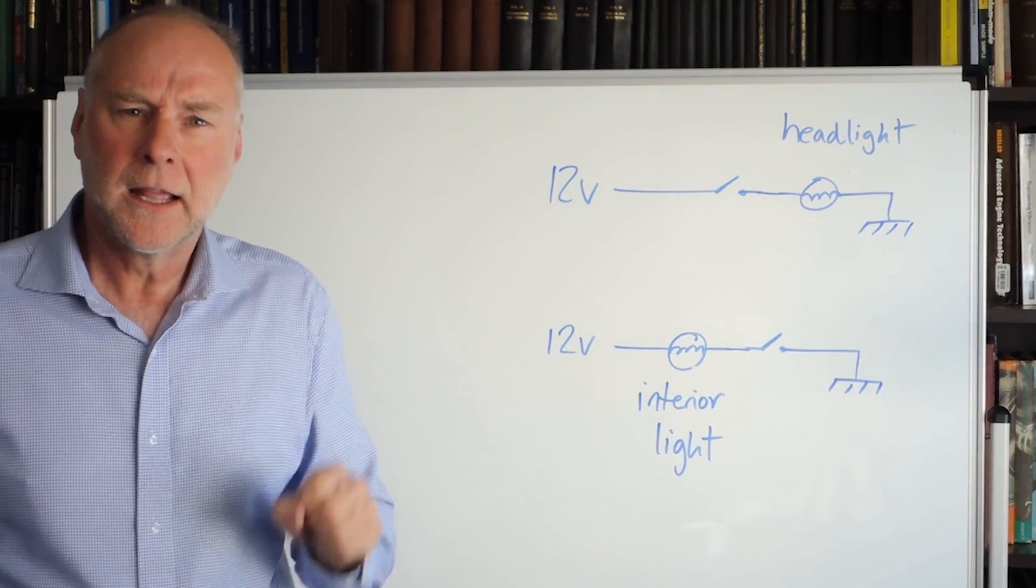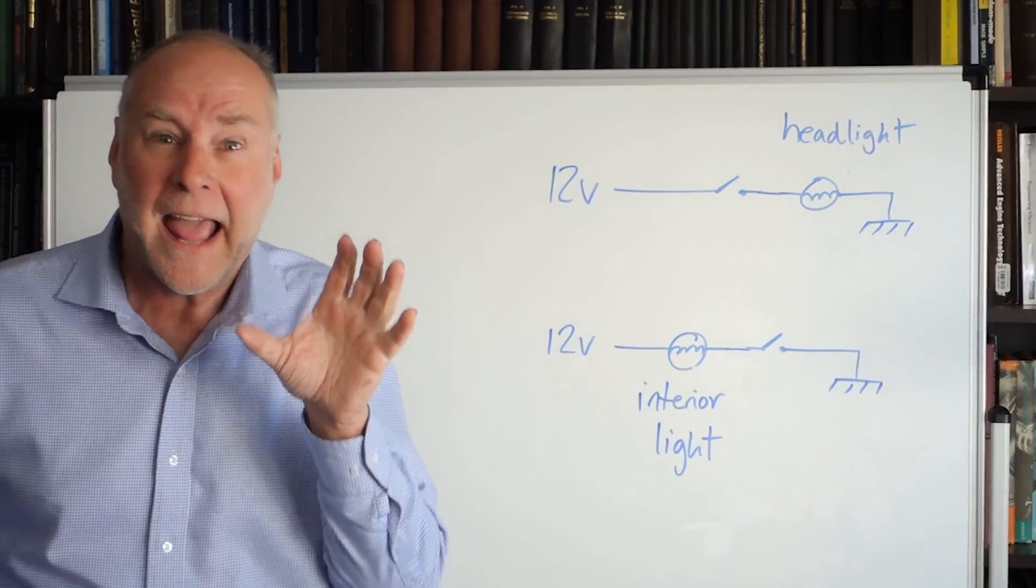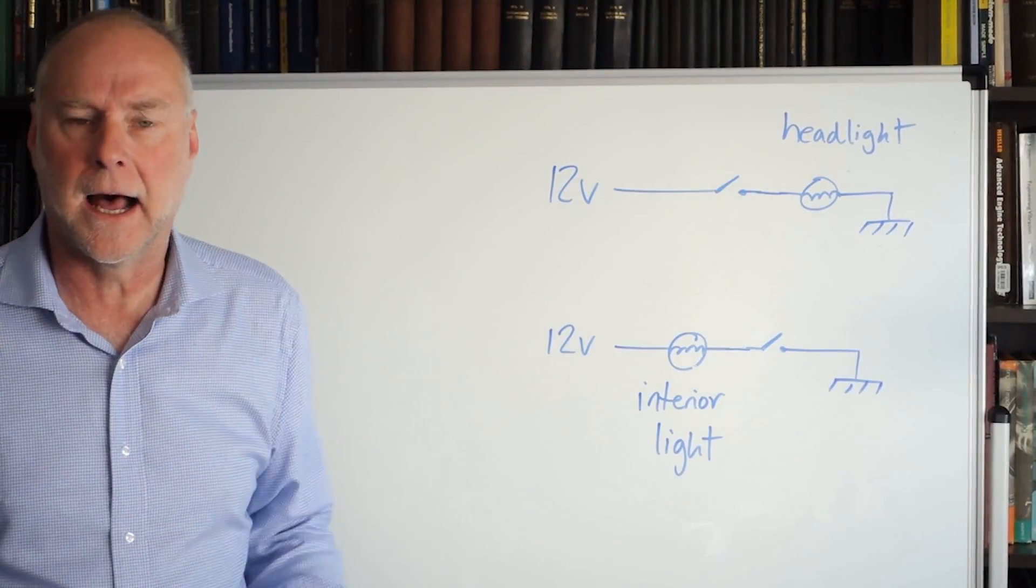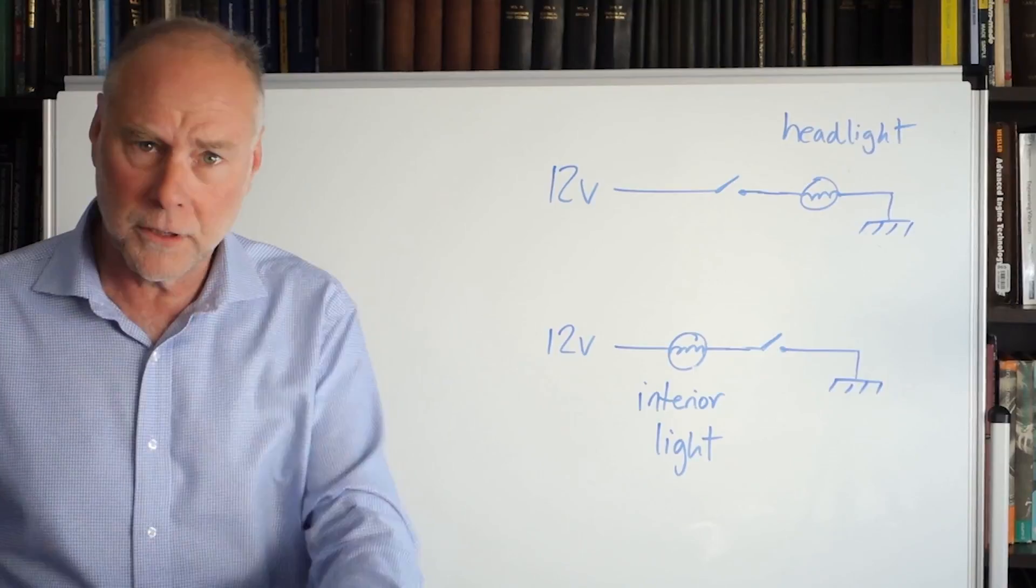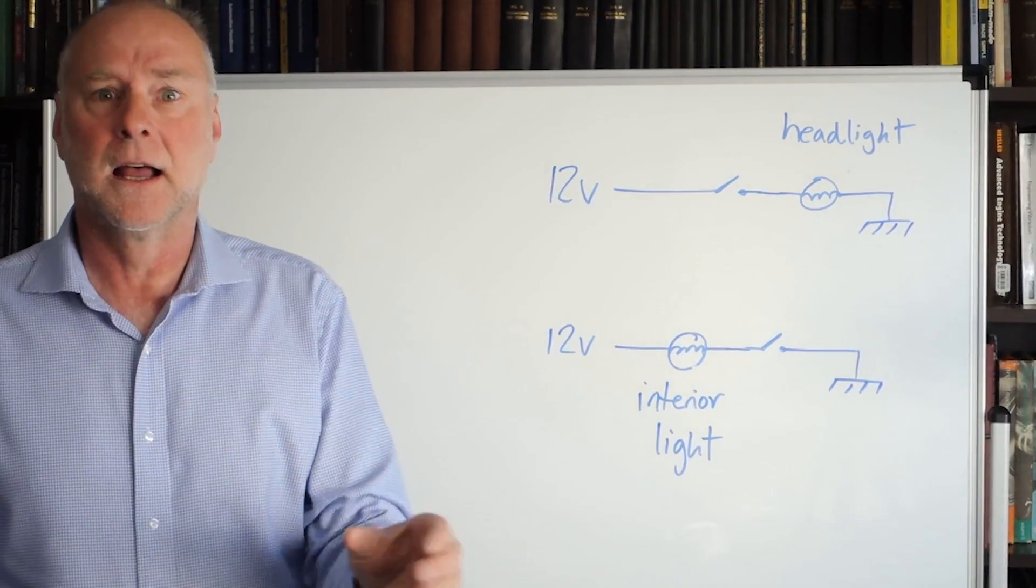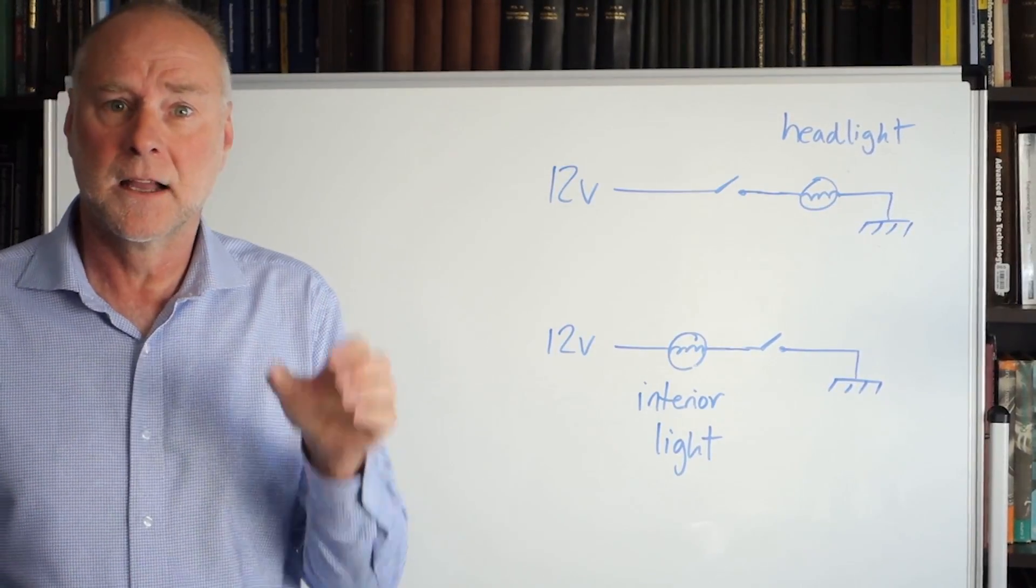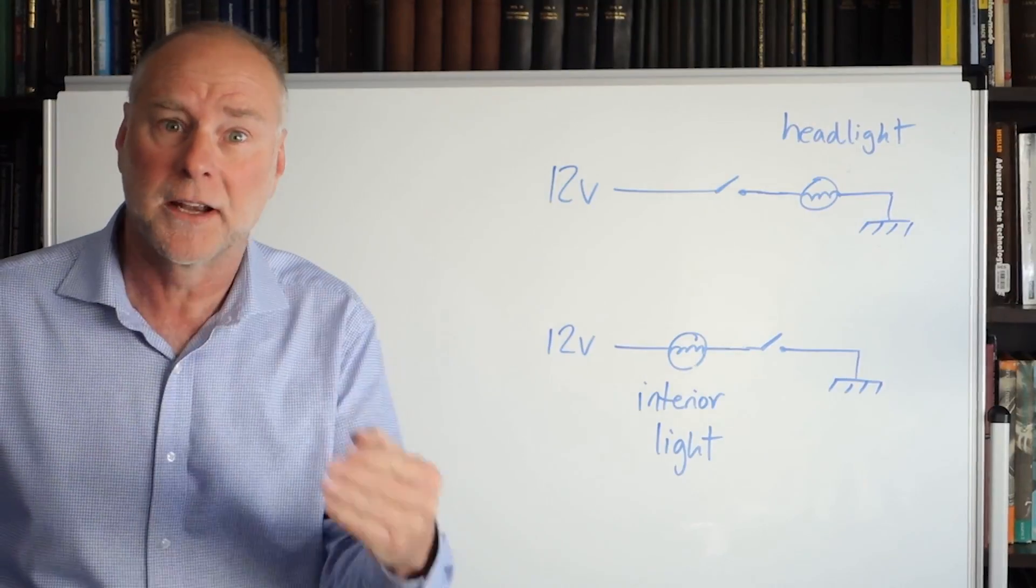What I want to do now in this video is talk about a headlights-on alarm that you can add to your car. It's dead simple, all you'll need is a polarized buzzer, in other words, an electronic buzzer that works when you connect power to it in only one direction.